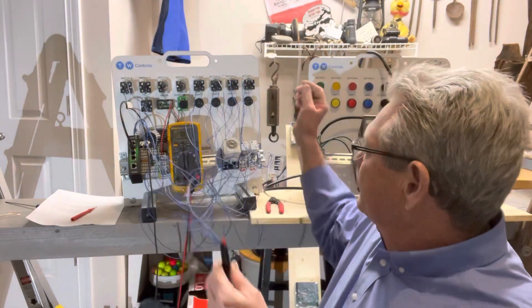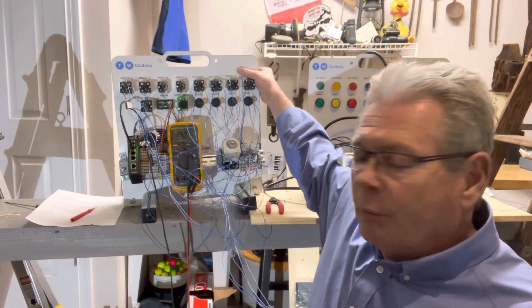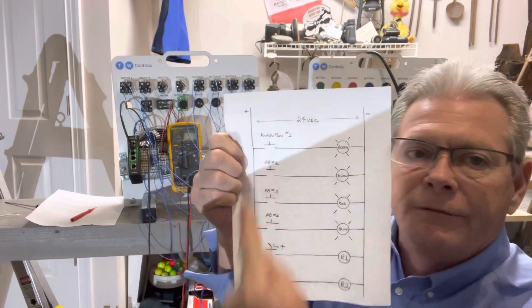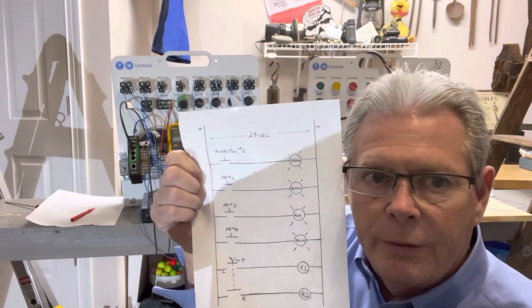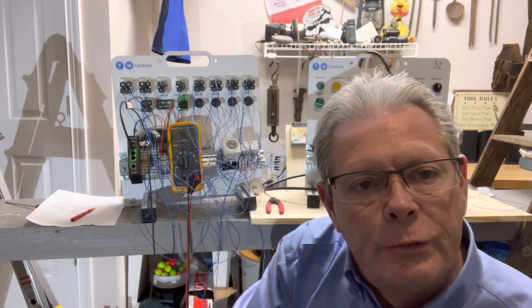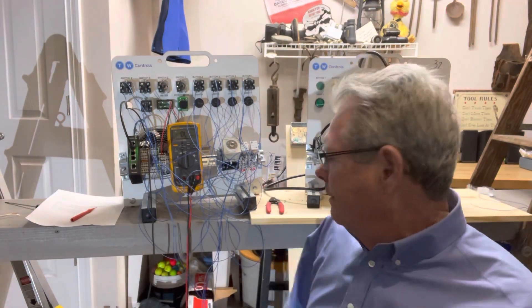Now we've got OL. If we look at our print, all these are open switches. If they're all open, we should have OL. We do. So that checks out. Infinity is a good reading if that's what you expect.